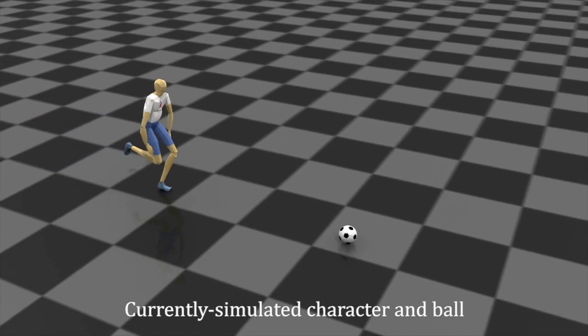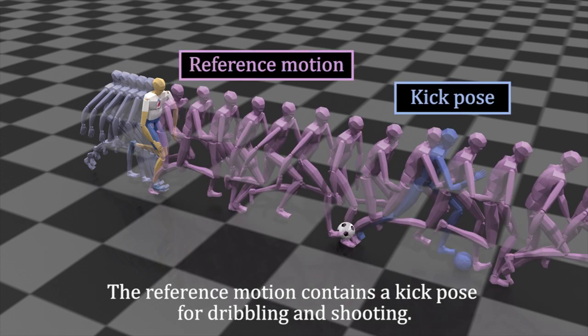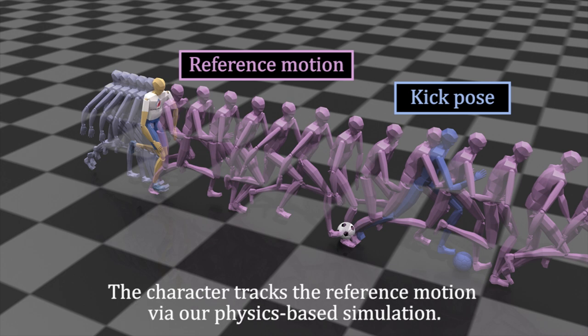We introduce our system overview. Here are the simulated character and ball. The past simulated motion is used to create a reference motion. The reference motion contains a kick pose for dribbling and shooting. The character tracks the reference motion via our physics-based simulation.